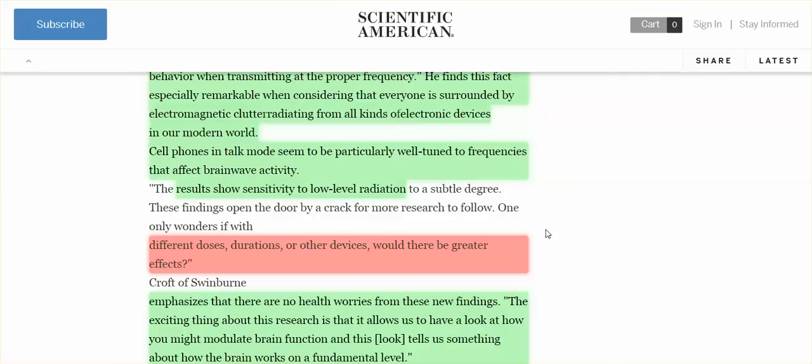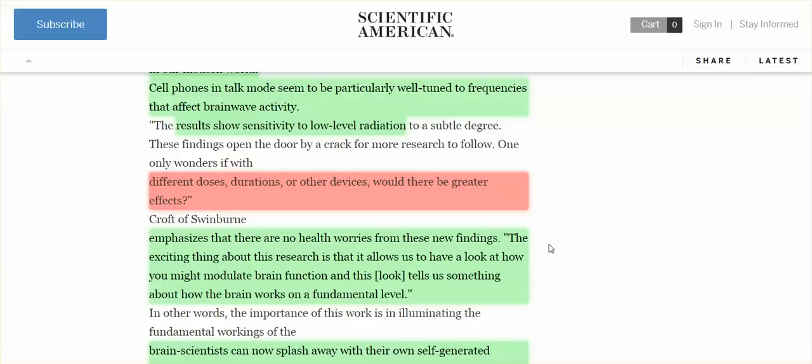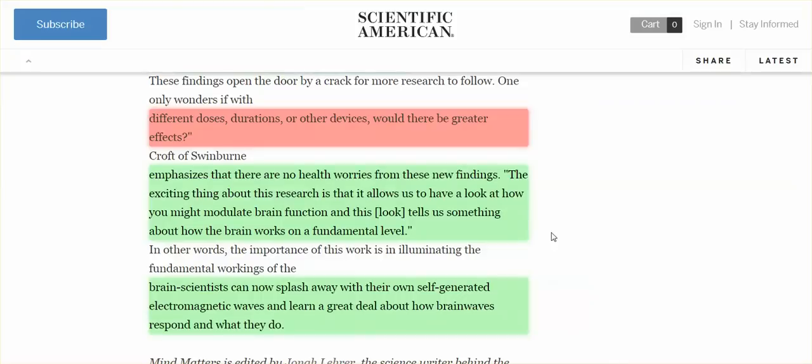Results show sensitivity to low level radiation. So what about different doses and durations and other devices? Would there be greater effects? Yes. Researchers emphasized there are no health worries from these new findings. This is so inconsistent. Here the researchers are telling you there is a significant effect on your brain coming from cell phones, but don't worry about it.